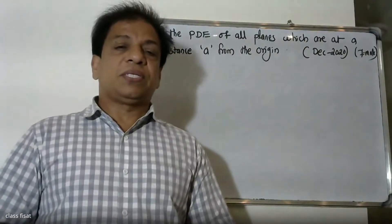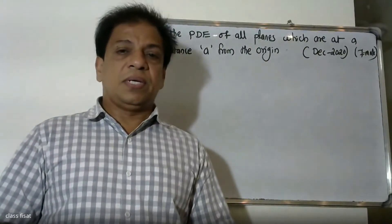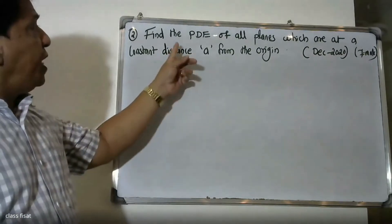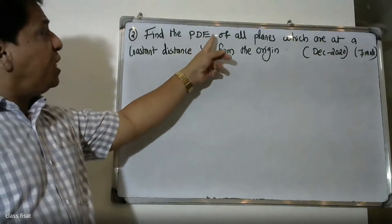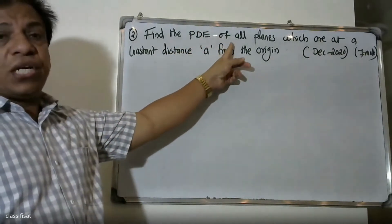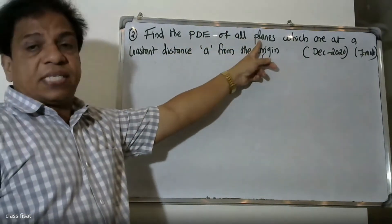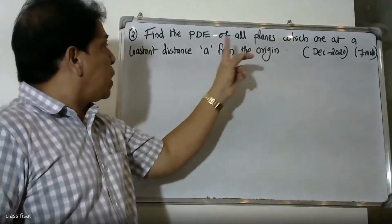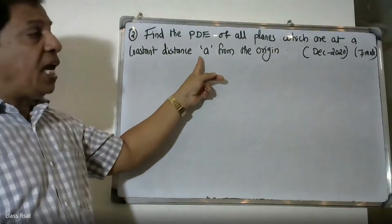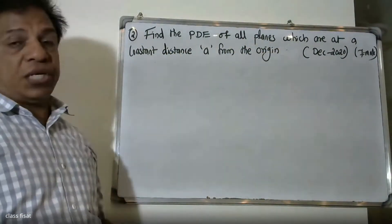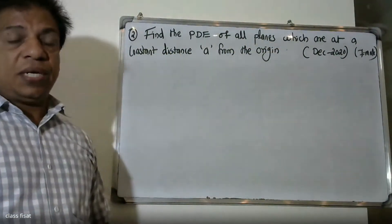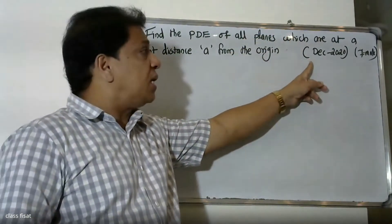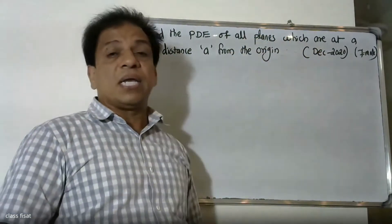Good morning, friends. This is a university question from December 27th, 2011 — a marks question. Find the partial differential equation of all planes which are at a constant distance A from the origin.